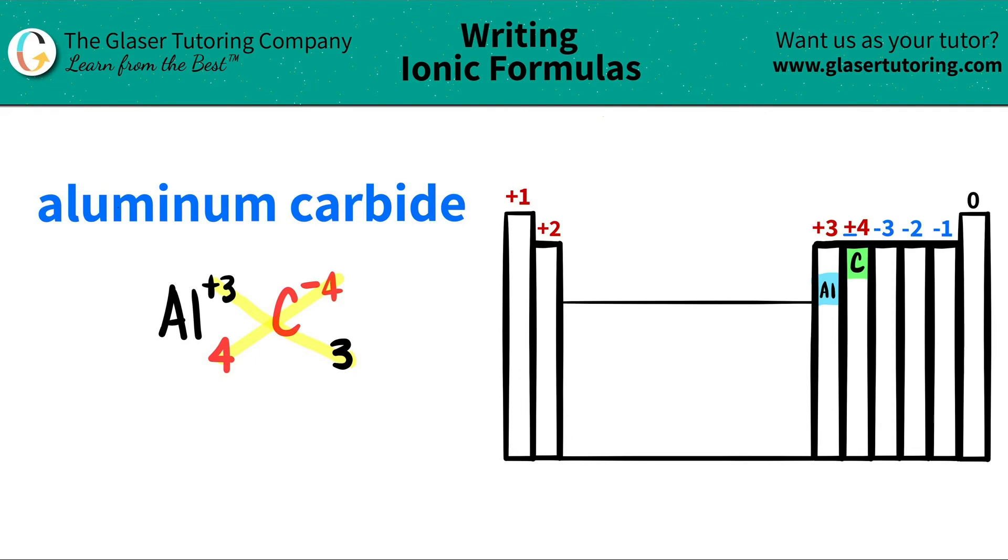Now I'm ready to write my formula. I have aluminum. I need four of them, so I put a four here. Then I have carbon, and I have three of them, so I put that three there. Look how easy that was. Aluminum carbide is just Al4C3.